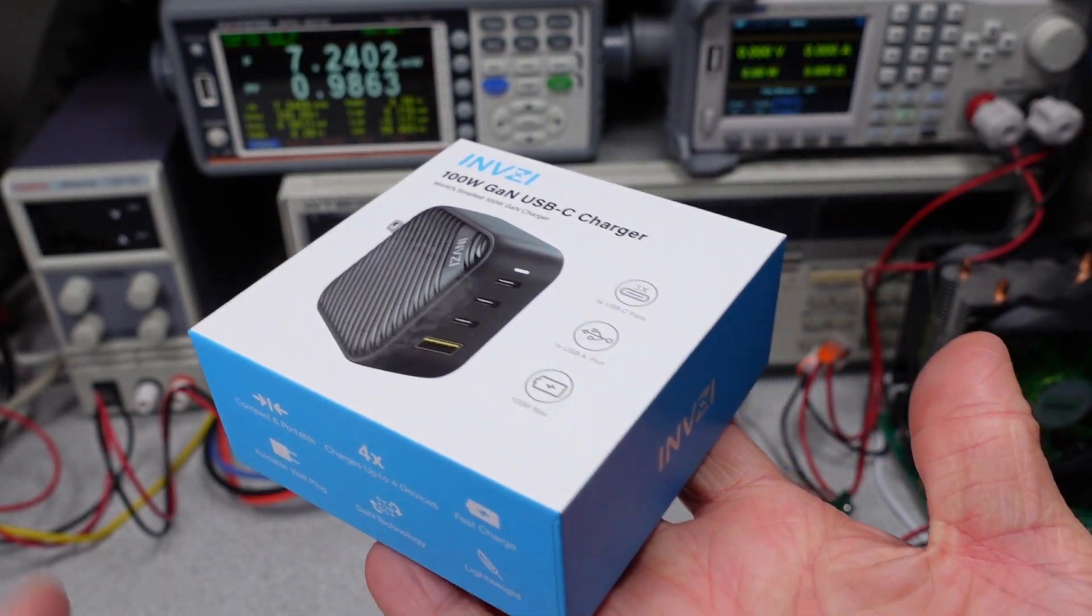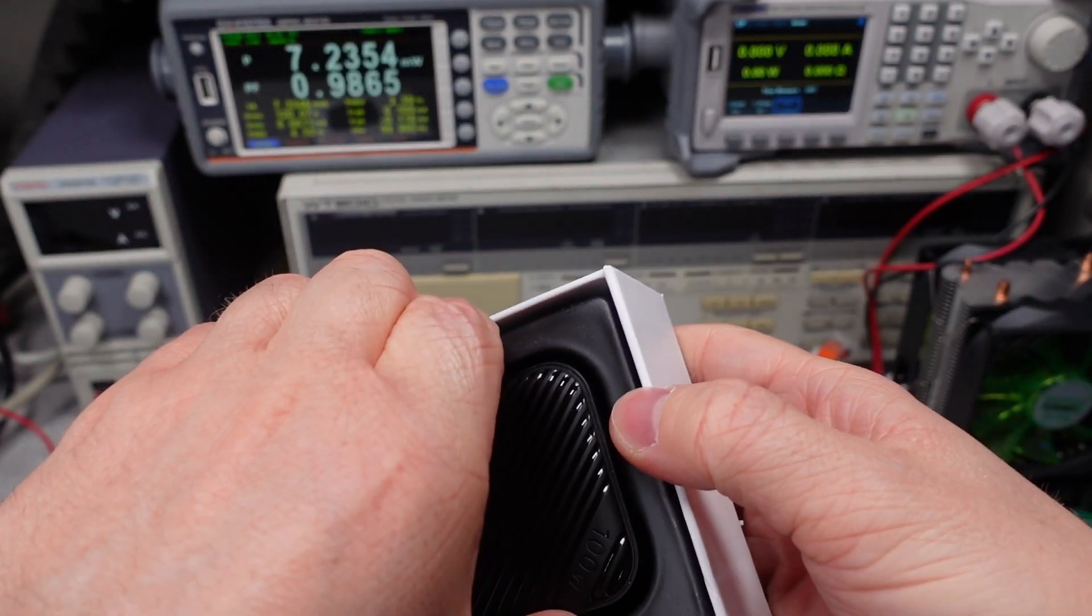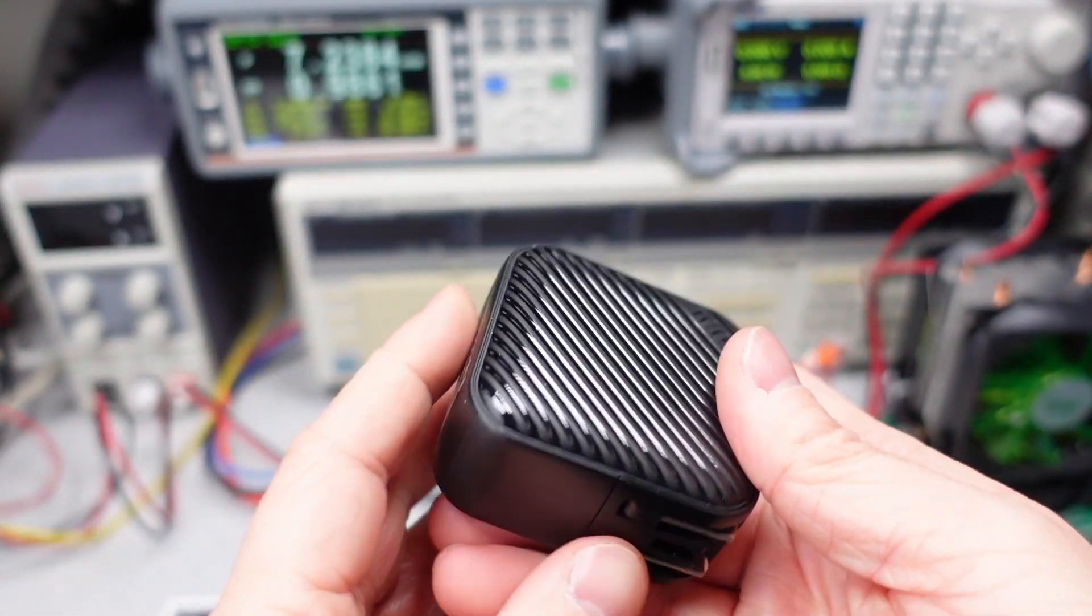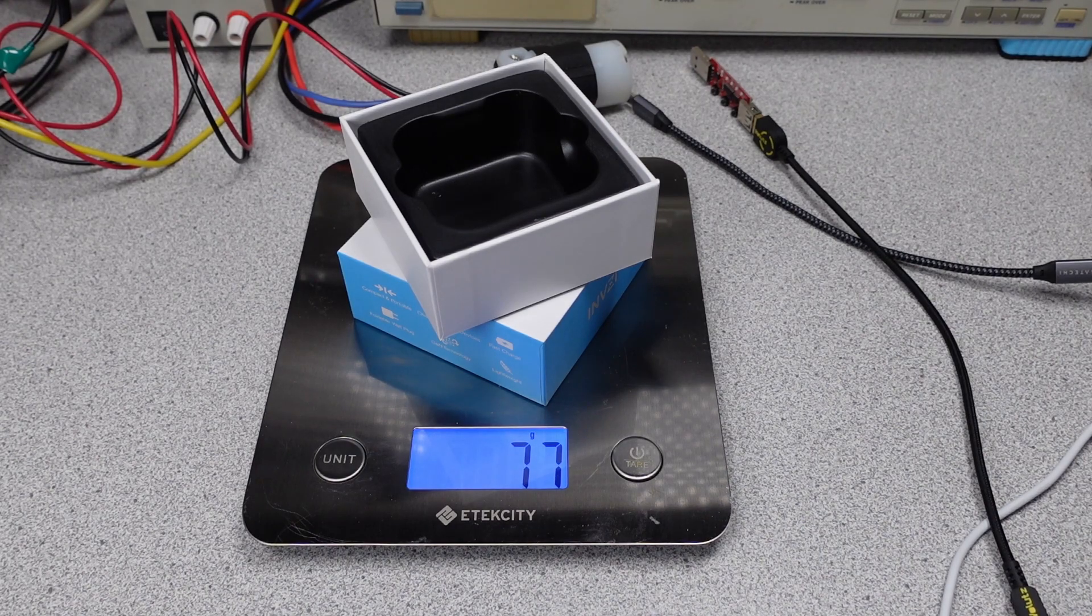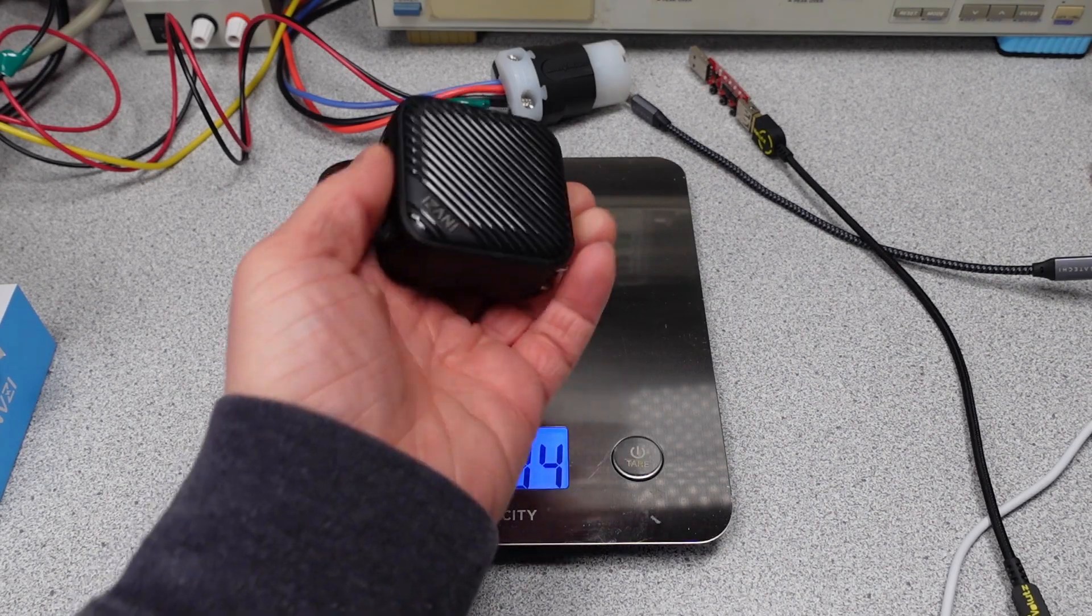This is probably the easiest unboxing I'll do. Done. The packaging weighs 77 grams. The power adapter weighs 194 grams, definitely on the heavy side.